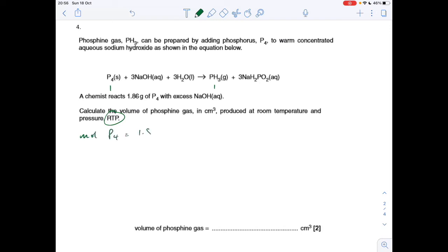Mass over MR, 1.86 divided by 124, so that's 0.015. So the moles of PH3 that will form is the same, 0.015, and the volume at RTP is going to be moles, 0.015 times 24,000, because we need it in cm cubed, and that's 360.